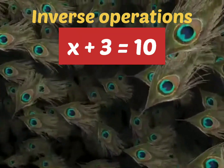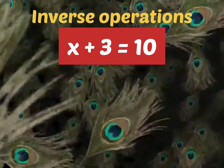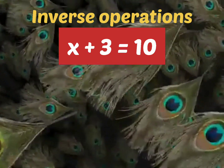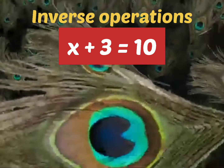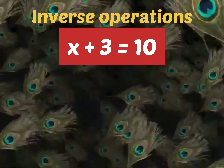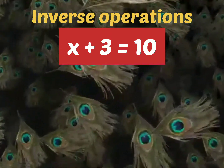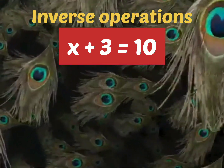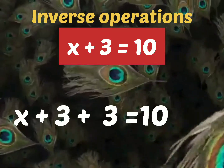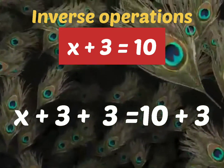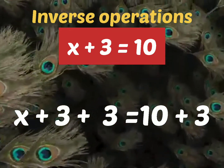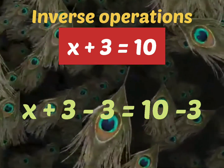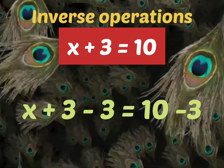Inverse operations. Let us consider an equation x plus 3 is equal to 10. In inverse operations, we must remember that whatever we do to the left hand side, we must do the same to the right hand side. If we add 3 to the left hand side, the same 3 should be added to the right hand side. Similarly, if we subtract 3 from the left hand side, the same 3 should be subtracted from the right hand side.